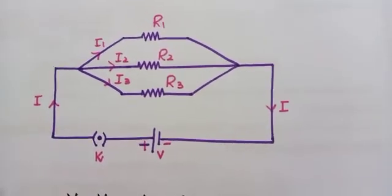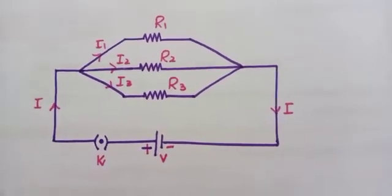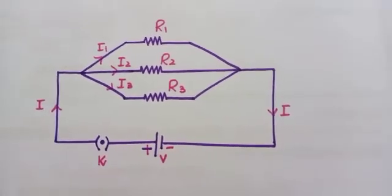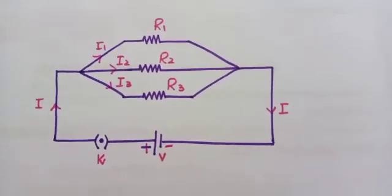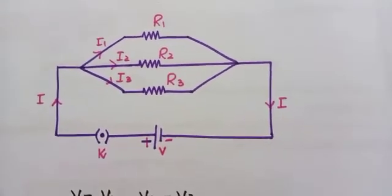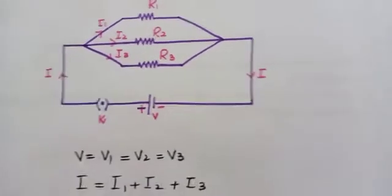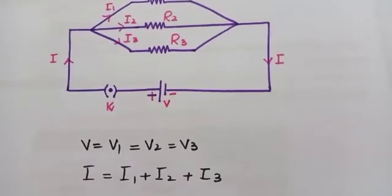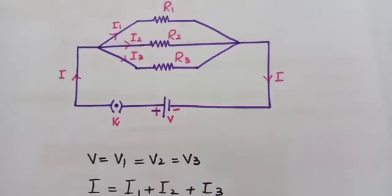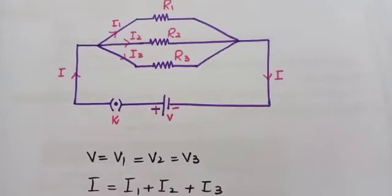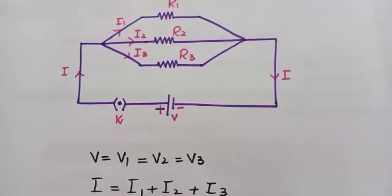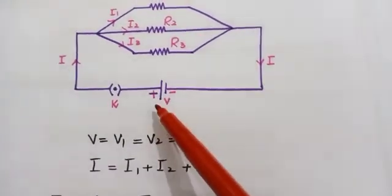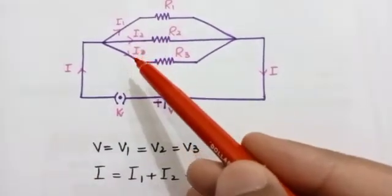The advantage of parallel combination is that we can independently turn on and off any resistor. The total voltage of the battery is supplied to all the resistors, and the voltage across each resistor is equal to the total voltage of the battery. One end of each resistor is connected to the positive terminal of the battery while the other end is connected to the negative terminal. So we can write V = V1 = V2 = V3.